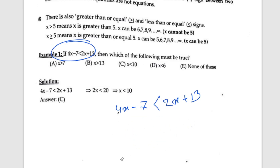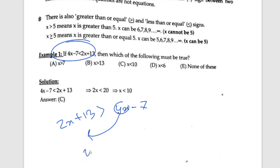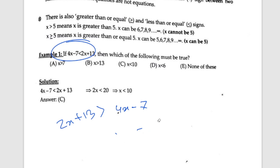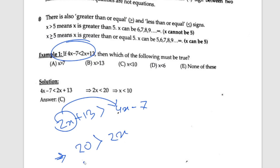So we get 2x less than 20, which gives us x less than 10. If I have a minus sign, I need to be careful. So: 20 greater than 2x, and 10 greater than x. This is the answer: x less than 10.